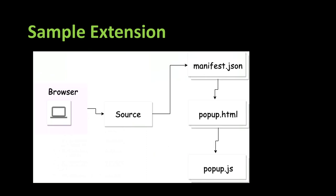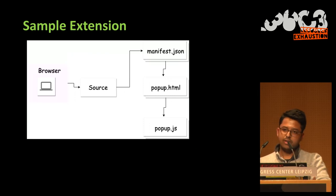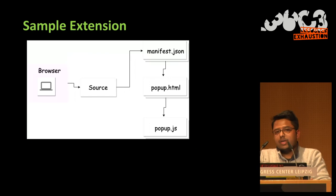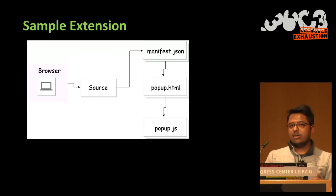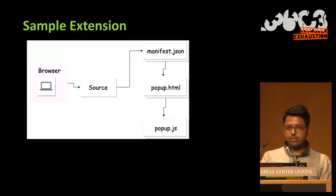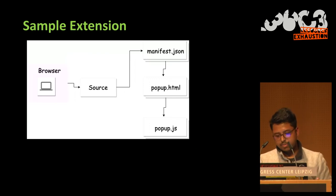Let's quickly build an extension that will break most things in Edge. Every extension has a manifest.json file with all permissions and configurations. The second file we need is popup.html, which is just an interface for the browser extension — the popup that appears when you click on any browser extension. Then we have popup.js as well.